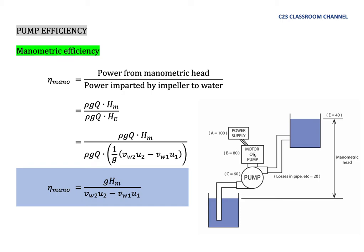From motor to pump there are mechanical parts — such as the shaft, gears, and so on — which cause energy losses. So from the 80 units the motor receives, it can only transfer about 60 units to the pump. The pump then transfers all that energy from the impeller rotation to the water, so the water now has 60 units of extra energy.